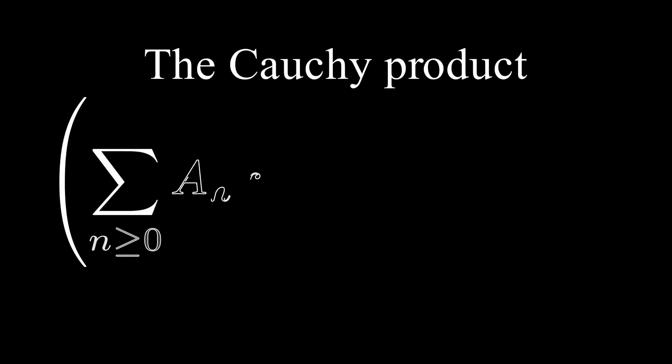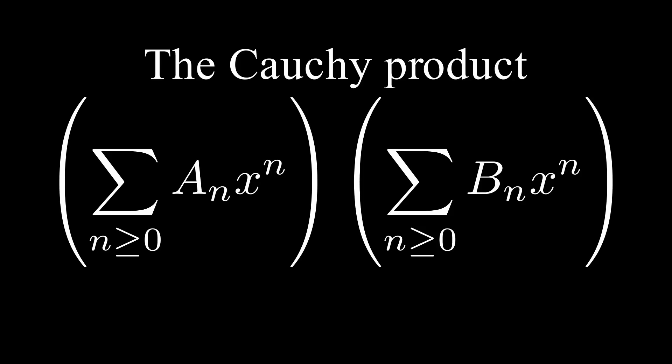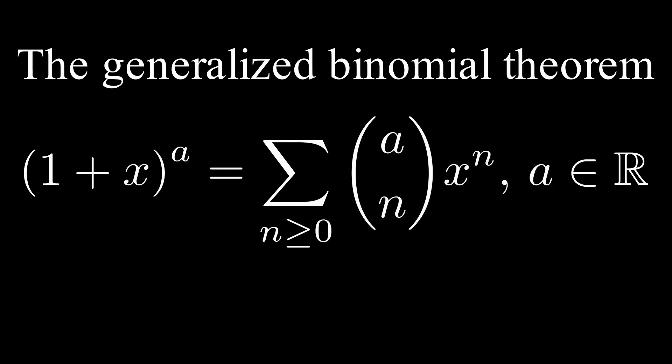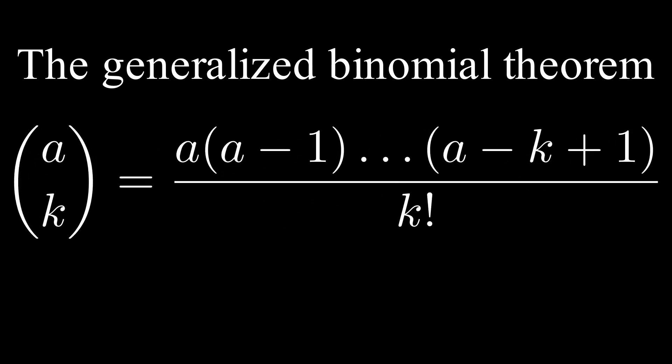An important formula that we will use while studying this kind of function is what we call a Cauchy product of two generating functions. Let a and b be two generating functions for two numbers an and bn. Then, we define their Cauchy product by the following formula. The last formula we need is the generalized binomial theorem, which is defined by the following formula, where the generalized binomial coefficient is expressed like this. With these tools, we are now ready to prove the explicit formula for the Catalan numbers.